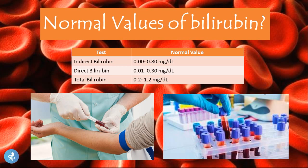The normal values are: indirect or unconjugated bilirubin, 0.0–0.8 mg/dL; direct or conjugated bilirubin, 0.01–0.3 mg/dL; and total bilirubin, 0.2–1.2 mg/dL. These are the normal values in a healthy average human being.